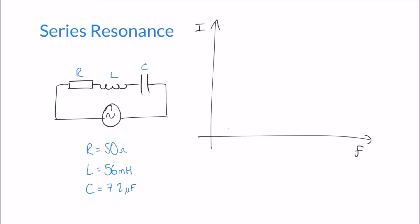Let's represent this with a graph of current against frequency. Because current is much bigger at the resonant frequency, as we sweep through a range of frequencies we see a peak on our graph. At that peak is our resonant frequency, f₀. If we try to increase the frequency beyond that, the reactances no longer match and don't cancel, so the current starts to decrease as the total impedance increases again, giving us a resonant peak where current is at a maximum.